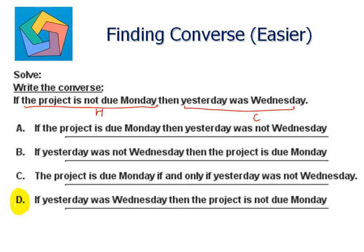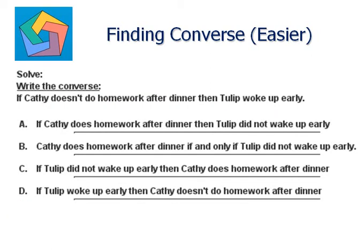Next problem. Solve. Write the converse. If Cathy doesn't do homework after dinner, then Tulip woke up early. Hypothesis. Conclusion. Interchanged together. So it becomes: if Tulip woke up early, then Cathy doesn't do homework after dinner. Which is the answer in the D part.